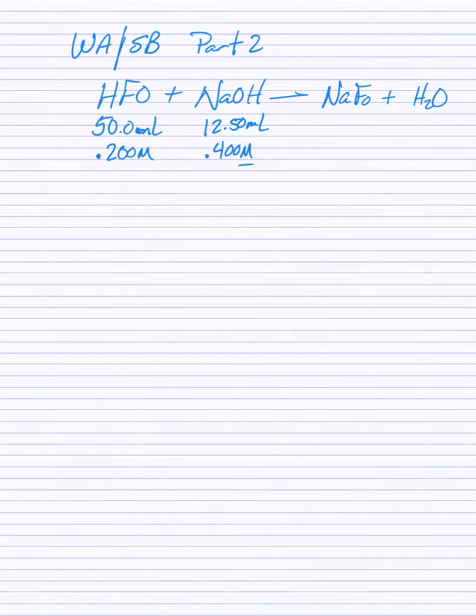This is part two of our video on weak acid strong base. Right now we've got 50 mils of 0.2 molar formic acid and now we're going to add 12.5 mils of 0.4M NaOH.